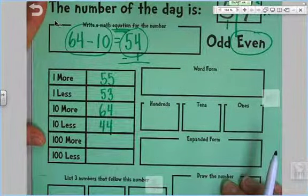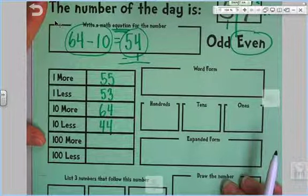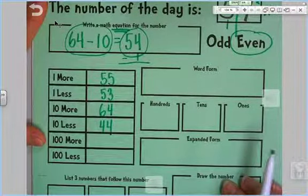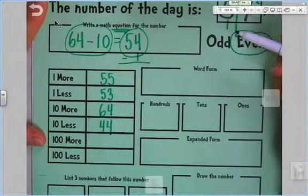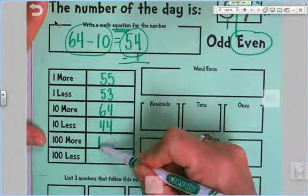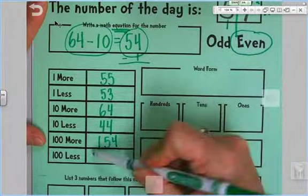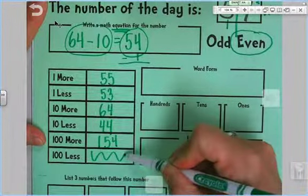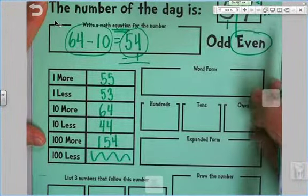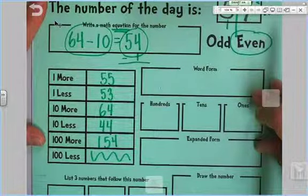Alright, now if we add a group of 100 in front of 54, we would end up with 154. And we're going to squiggle this out because we would end up with a negative number. And we're not going to worry about negative numbers right now.